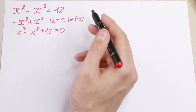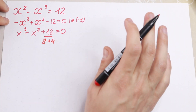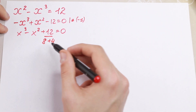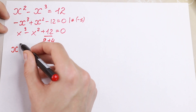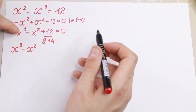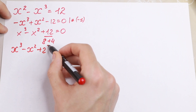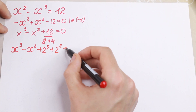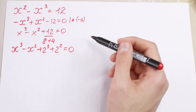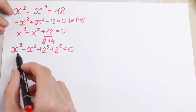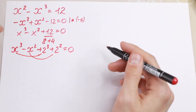Next, we write 12 as 8 plus 4. Moreover, we write 8 as 2³ and 4 as 2². So we'll have: x³ minus x², plus 2³ plus 2² equal to zero. Then we group x³ with 2³, and x² with 2².